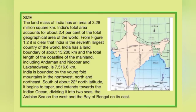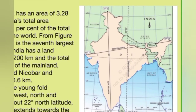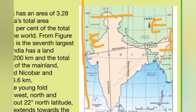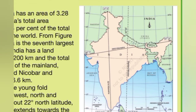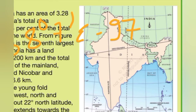Now we will talk about the longitudinal extent — that is, with respect to vertical lines. India's longitudinal extent is from 68°7' East to 97°25' East. We write 'East' because India lies entirely to the east of the 0° longitude, the Prime Meridian — just as 0° equator is for latitude, 0° Prime Meridian is for longitude.